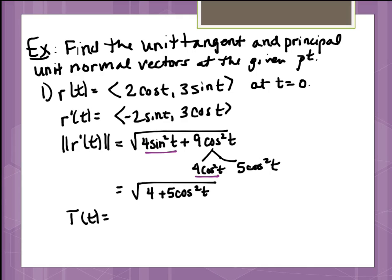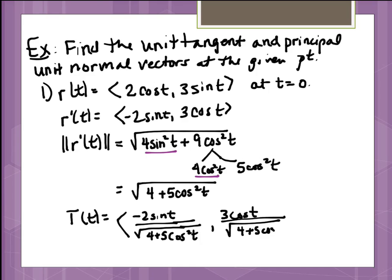And then we've got plus the 5 cos squared from the other piece still there. So our T of t vector is actually the r prime components, each over this magnitude of r prime. So you have negative 2 sin of t over the square root of 4 plus 5 cos squared t. And then we have 3 cos t over the square root of 4 plus 5 cos squared t.